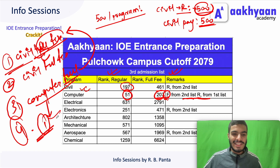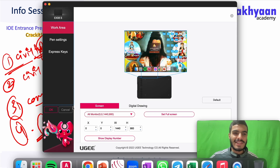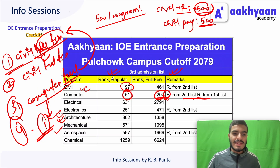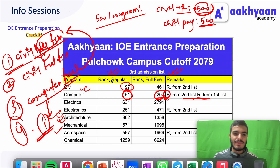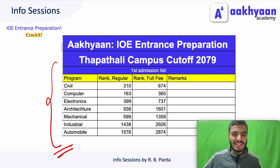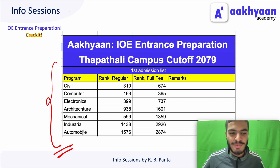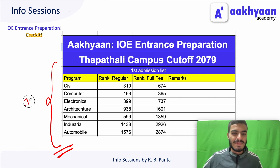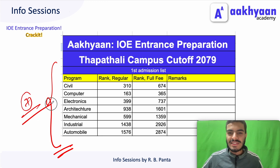This is the same as Electronics and Architecture. Now I have to ask you about the school campus. This campus offers Civil, Computer, Electronics, Architecture, Mechanical, Industrial, and Automobile programs — six to seven programs in total. There are four programs at one college, while students have been offered seven programs.